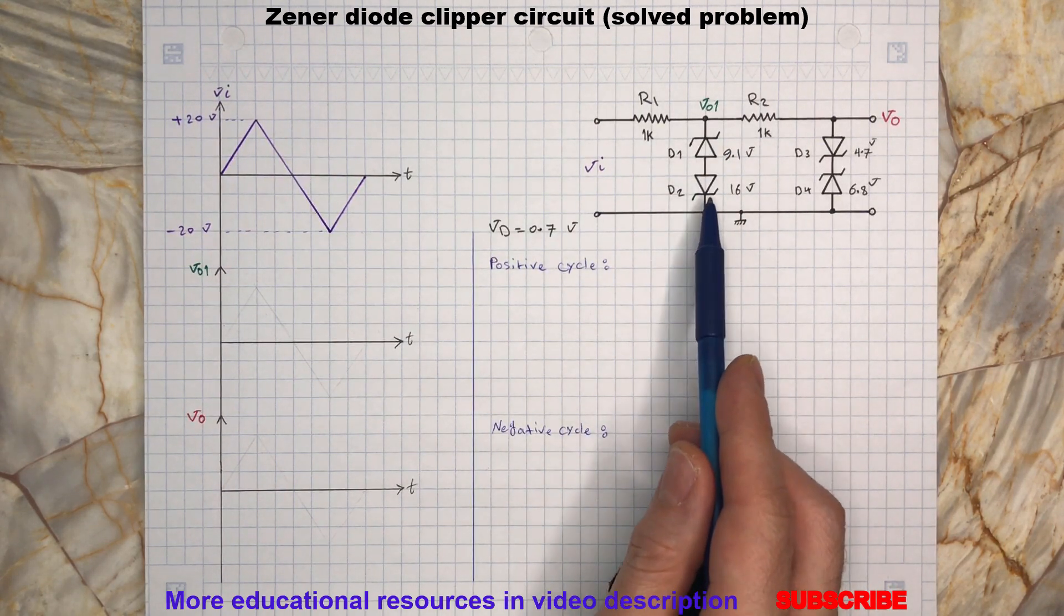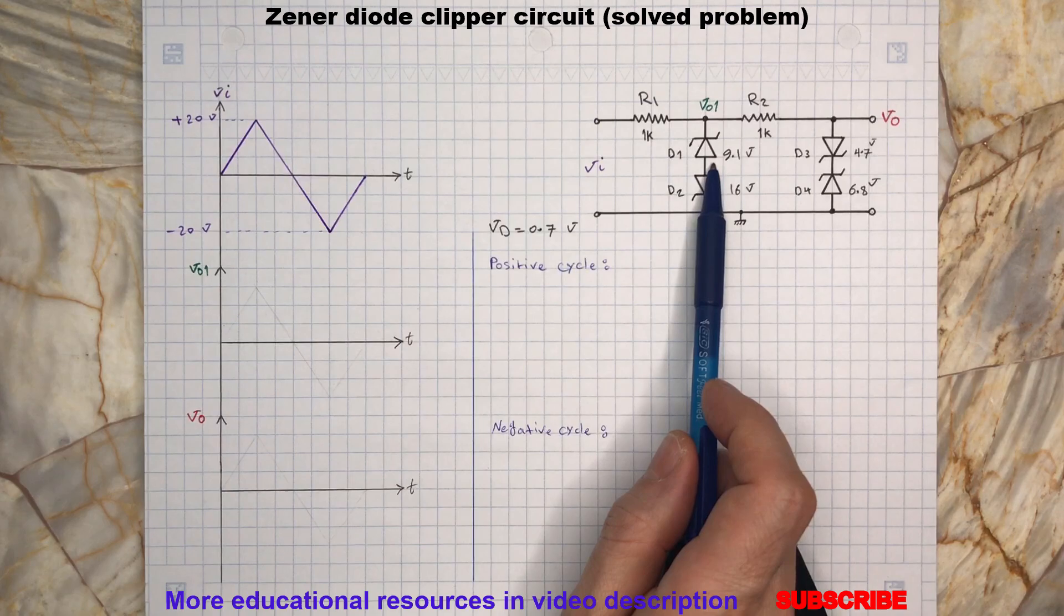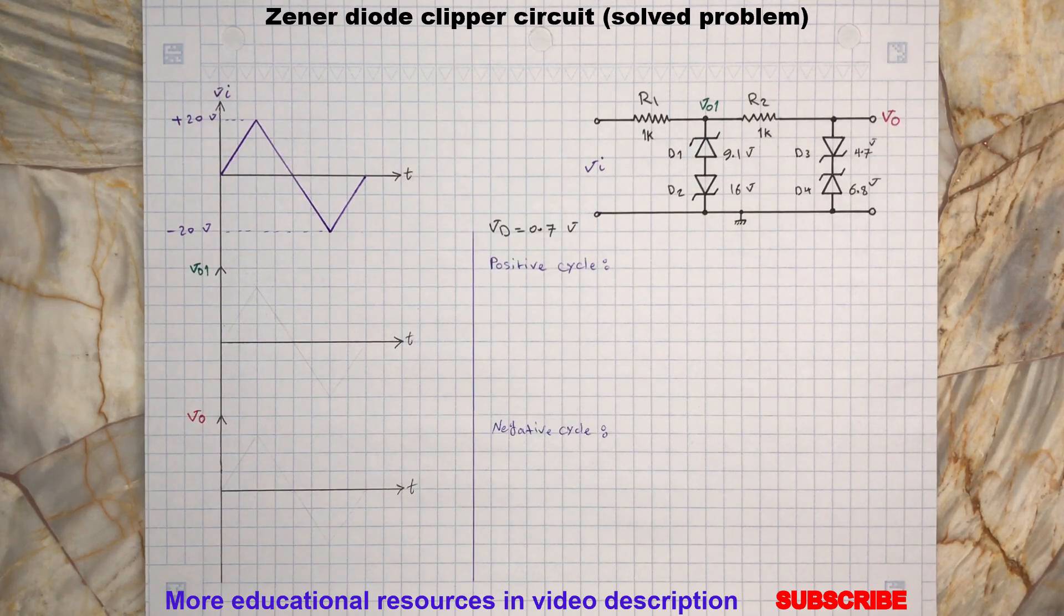Therefore D1 will require 9.1 volt to conduct and D2 will only need 0.7 volt to operate. Now since D1 and D2 are in series, when the input voltage reaches 9.1 plus 0.7 volts, then both will start conducting.